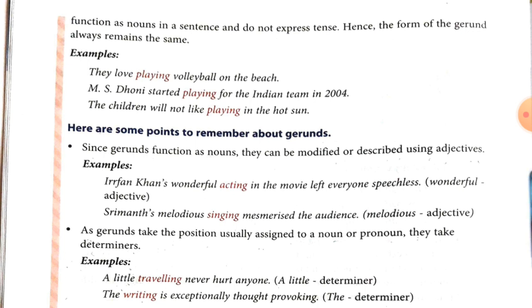Second: Sriram's melodious singing — which singing? Melodious singing. Melodious is the adjective here. Second rule: as gerunds take the position usually assigned to a noun or pronoun, they take determiners. For example, a little travelling never hurt anyone — here, what is 'a little'? A determiner.